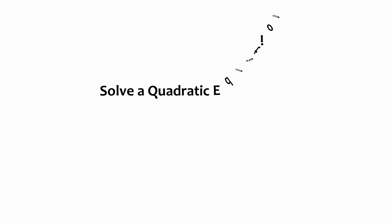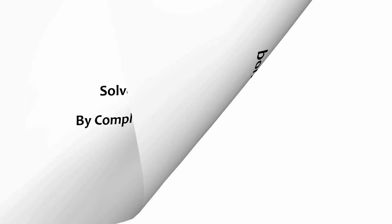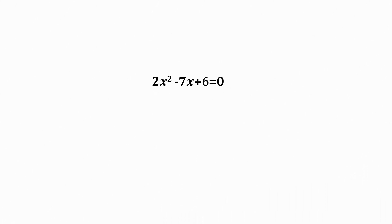Hi, in today's session, we are going to solve a quadratic equation by completing the square method. Let's start with a question. Let the question be 2x² - 7x + 6 = 0.